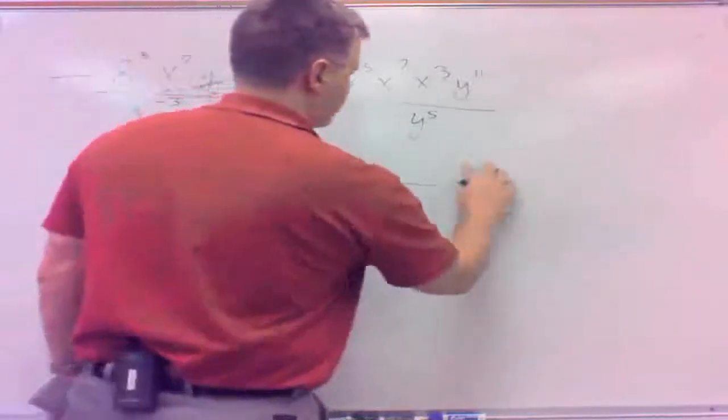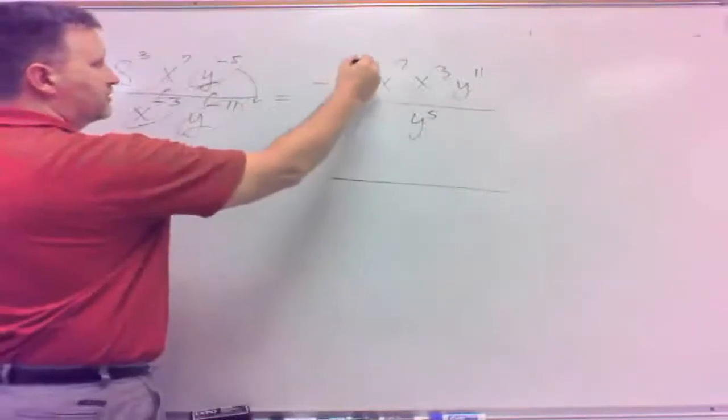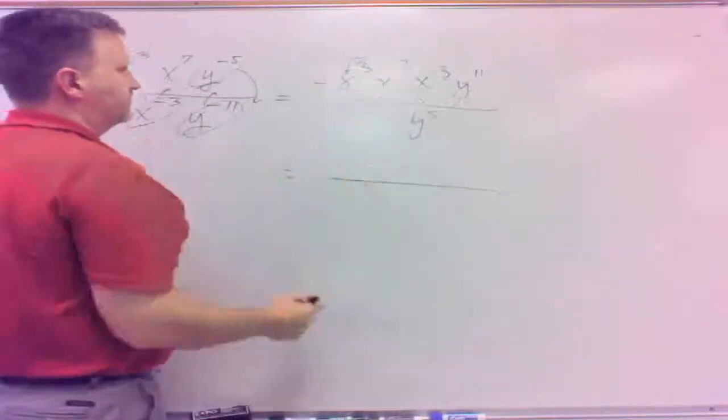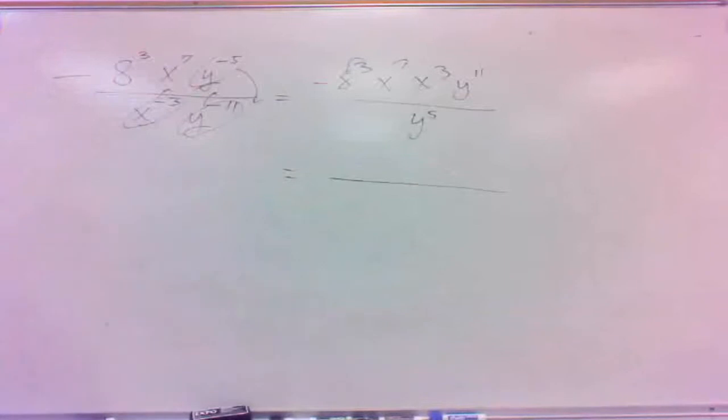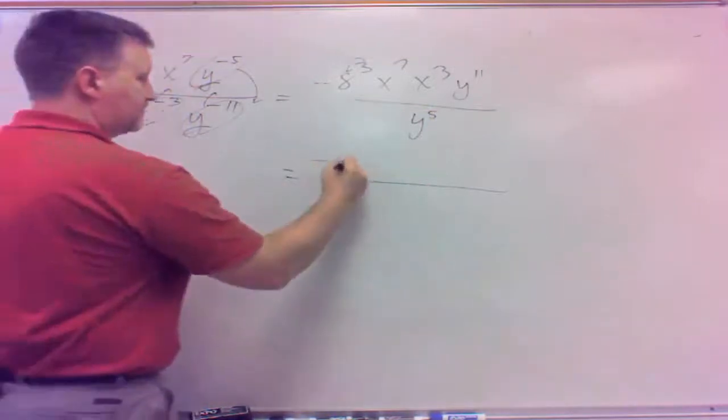Talk about negative 8 cubed. The cube only goes with the 8. Actually, it wouldn't matter here, but so it's 8 times 8 times 8, and then the negative of that, which is 512. It would be a negative 512.